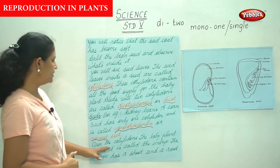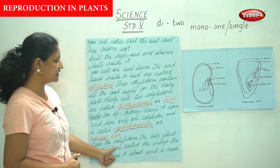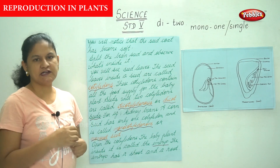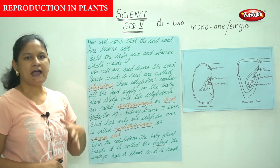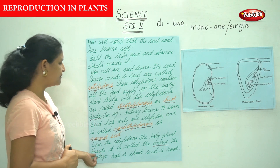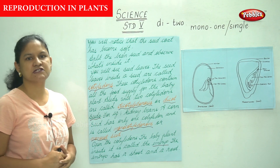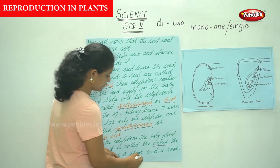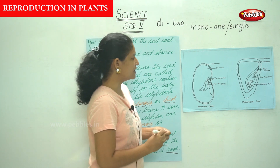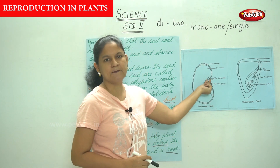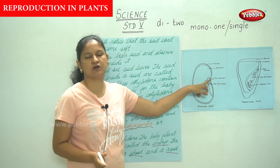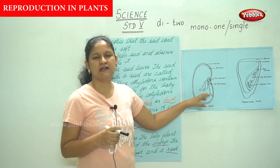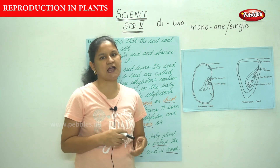Next, we are going to open the cotyledons. The baby plant found inside is called the embryo. Once we open the cotyledon, we find a baby plant inside which is called the embryo, and the embryo has a shoot and a root.